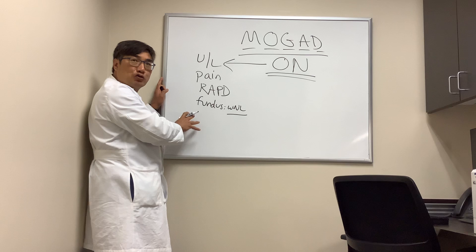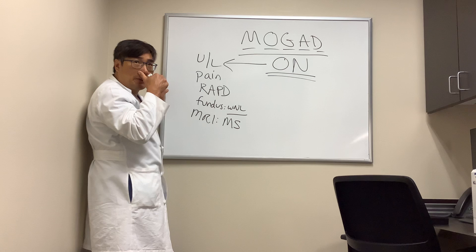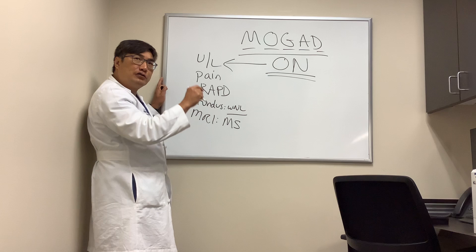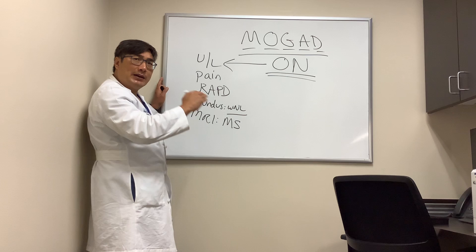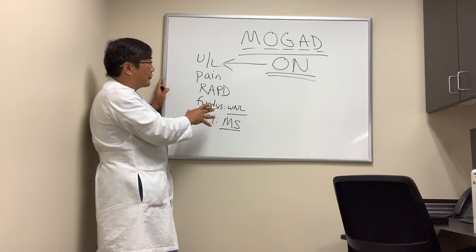The MRI scan will show enhancement of the optic nerve, usually a short segment in the orbit. MS lesions will be seen on brain MRI as T2 FLAIR hyperintense signal, periventricular, ovoid, supratentorial and infratentorial, with or without enhancement. These provide dissemination in time and space radiographically to meet the McDonald criteria for multiple sclerosis.